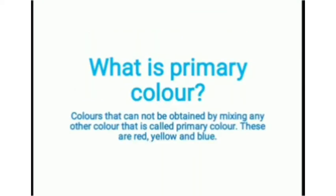What is a primary color? Colors that cannot be obtained by mixing any other color are called primary colors. These are red, yellow, and blue. These colors cannot be created by mixing any other colors, but with these primary colors you can create new colors.